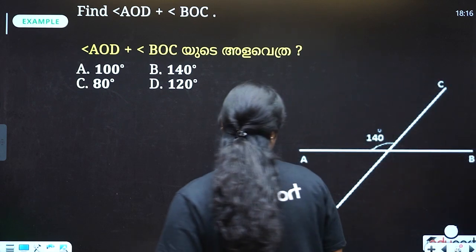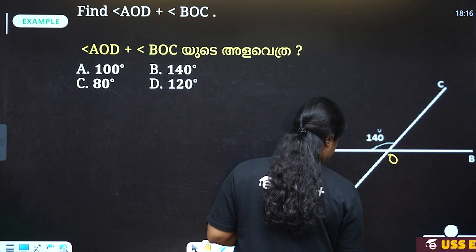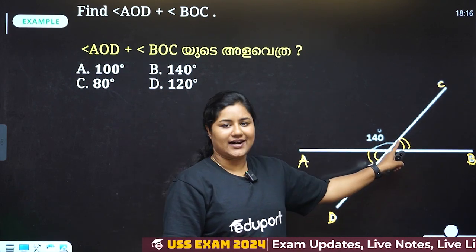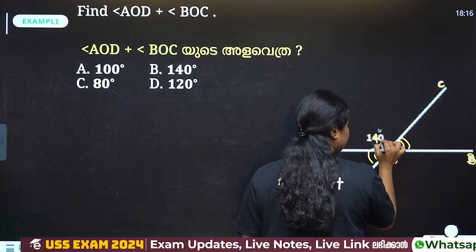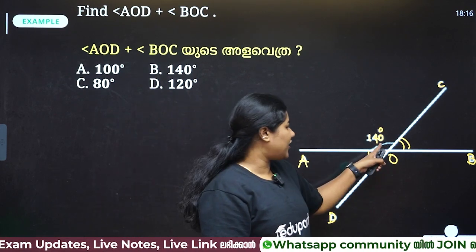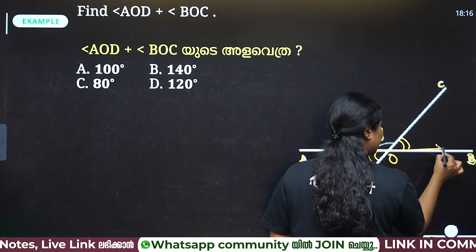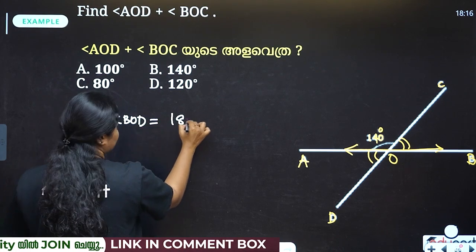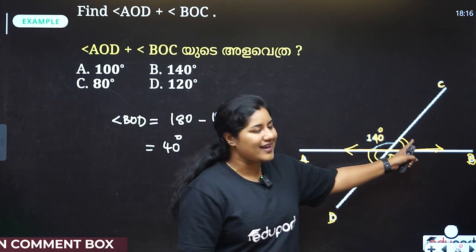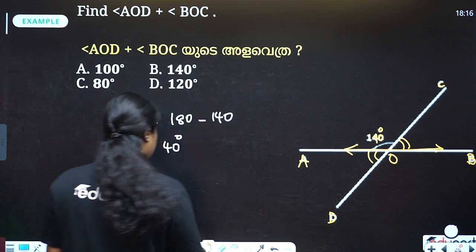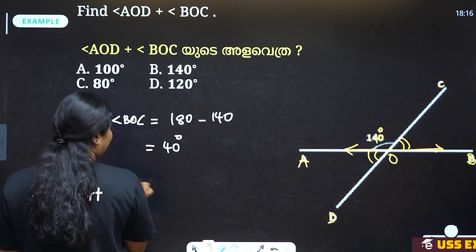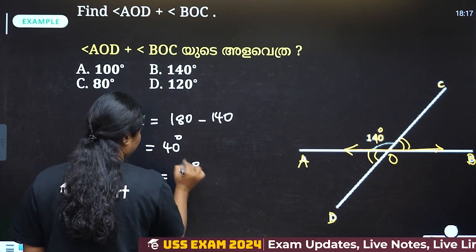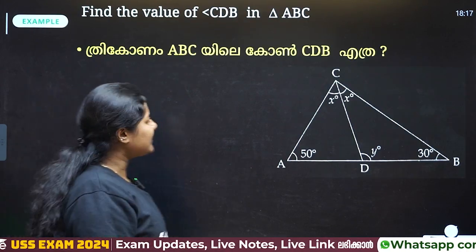AOD plus BOC. AOD is the one angle, BOC is the other angle. If you fix these two angles together — at the same time, BOD is 180 minus 360... angle BOD is 60. AOD and BOC are opposite angles, so they are equal. It's 60 degrees each. 60 plus 60 is — wait, 40 plus 40 is 80. Simple.